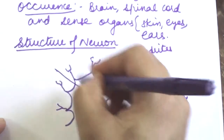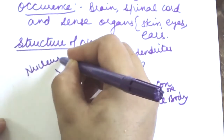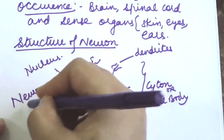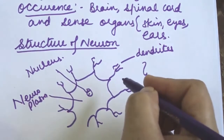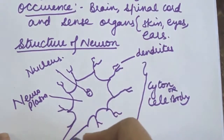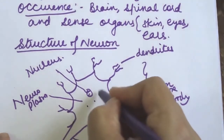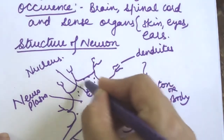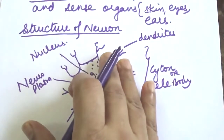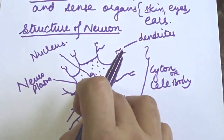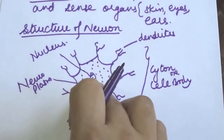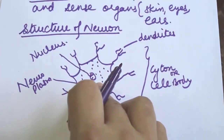This is the nucleus, and here is the neuroplasm — we call the cytoplasm 'neuroplasm' because this is a neuron. The cell body or cytone is the main part of the nerve cell. It contains the nucleus and a major part of the cytoplasm. Cell body has all types of cell organelles.